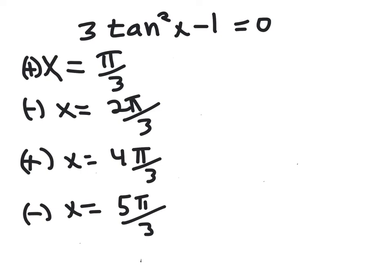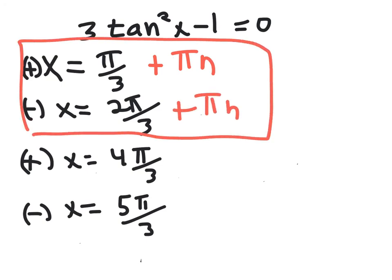Okay, to write the general solution, we're taking into account that our period was π, so I'm going to add not 2π this time, but just π. So π n to each of these. Now these represent our general solution.